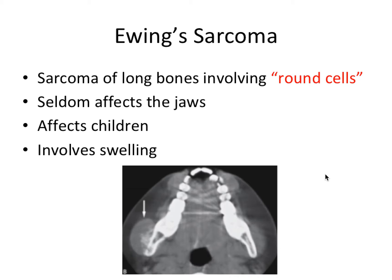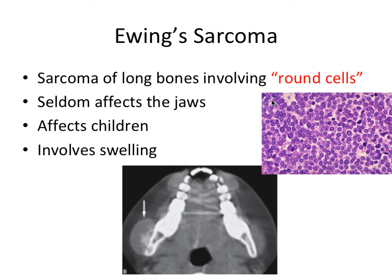Next we have Ewing's sarcoma, which is a sarcoma of long bones involving round cells — basically undifferentiated mesenchymal cells. It seldom affects the jaws because it mostly affects long bones like the femur. It affects children mostly and involves pretty intense swelling, which you can see in this axial radiograph. It's not frequently asked about on boards, but something to keep in the back of your head.